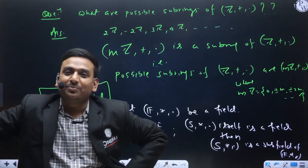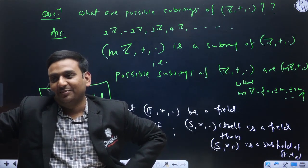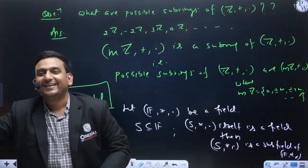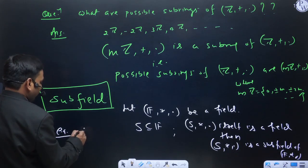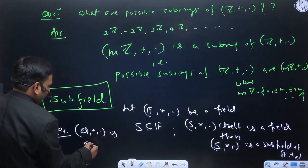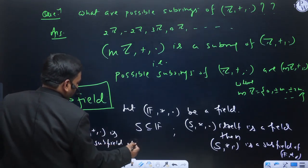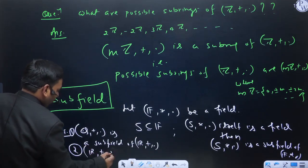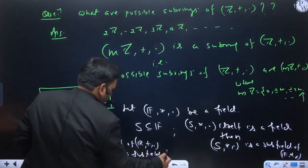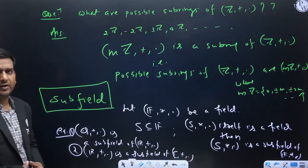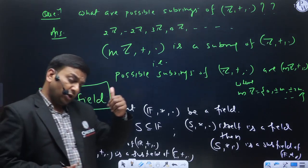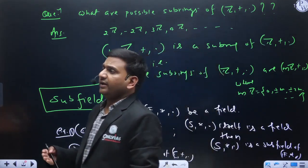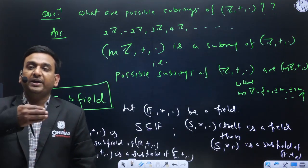Can you try to give some examples of that? For example, if you observe carefully: Q with + and · is a subfield of R with + and ·. And R with + and · is a subfield of C with + and ·. And why I said to recall the previous concept talk — because there I talked about different categories of rings, integral domains, and fields, so from there you can pick different examples.